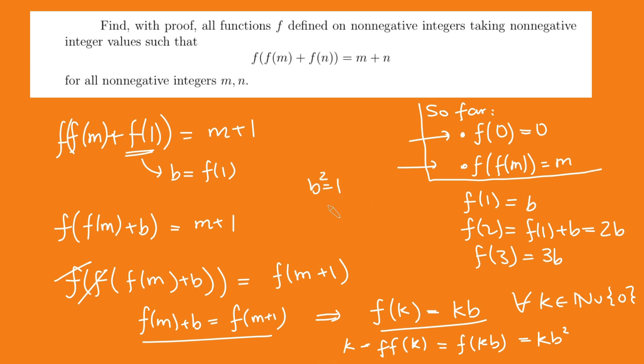And since b must be a non-negative integer because of the constraints in the problem, we have that b must be 1. And so if b is 1, we can substitute that into here and we get that f of k is simply k. And so the solution to this problem, the only function that satisfies this, is the function f of x equals x for all non-negative integers x.